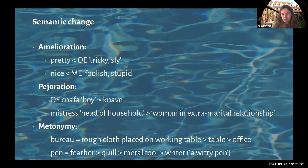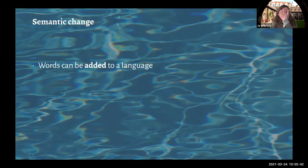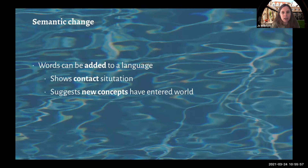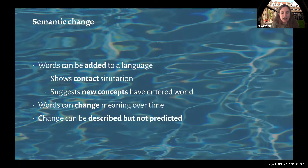Just as with sound change, we can draw up the patterns and laws of what happens in this kind of change. Words can be added to a language, which might show a contact situation and suggest that new concepts have entered the world. We can also see that words can change meaning over time. It's important to say that this change can be described but not predicted — you wouldn't have said that a word for feather would eventually be used to describe a writer, but once that change has happened you can explain why and point to similar examples.